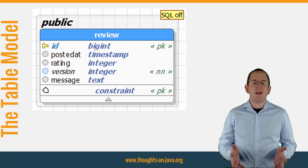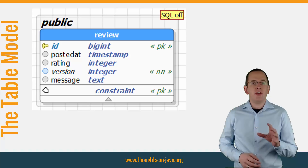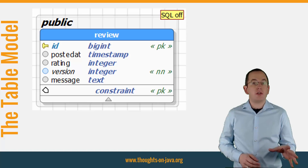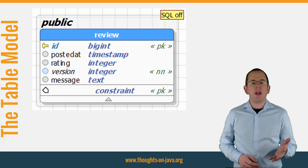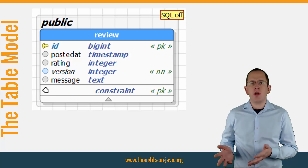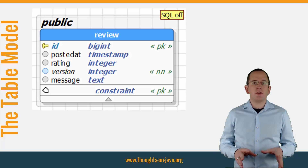Let's take a look at the table model before we talk about the entity mappings. The review table stores all customer reviews. The message of an extensive review can be pretty long and I modeled it with PostgreSQL's text type, which supports variable content length up to 1GB.